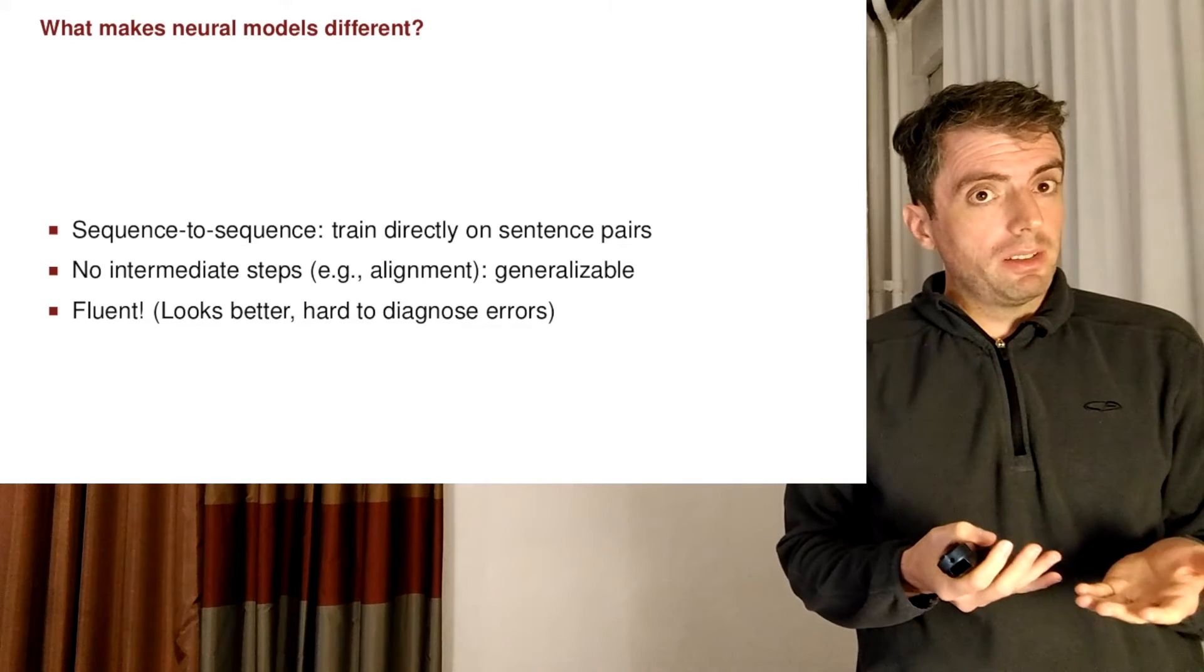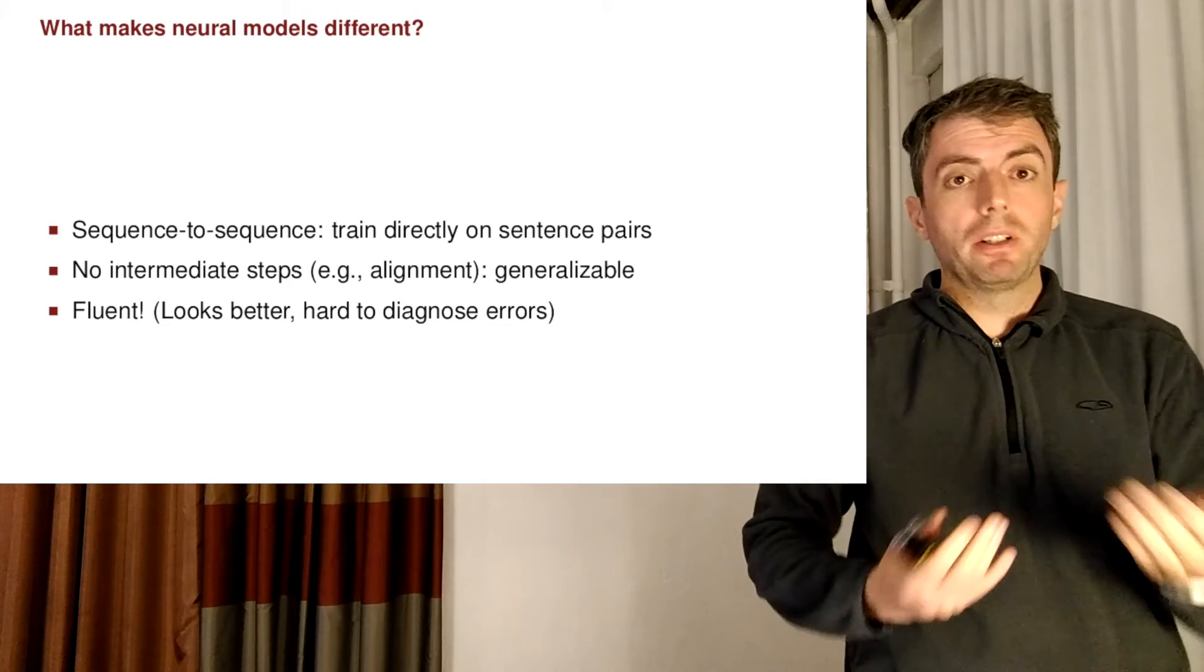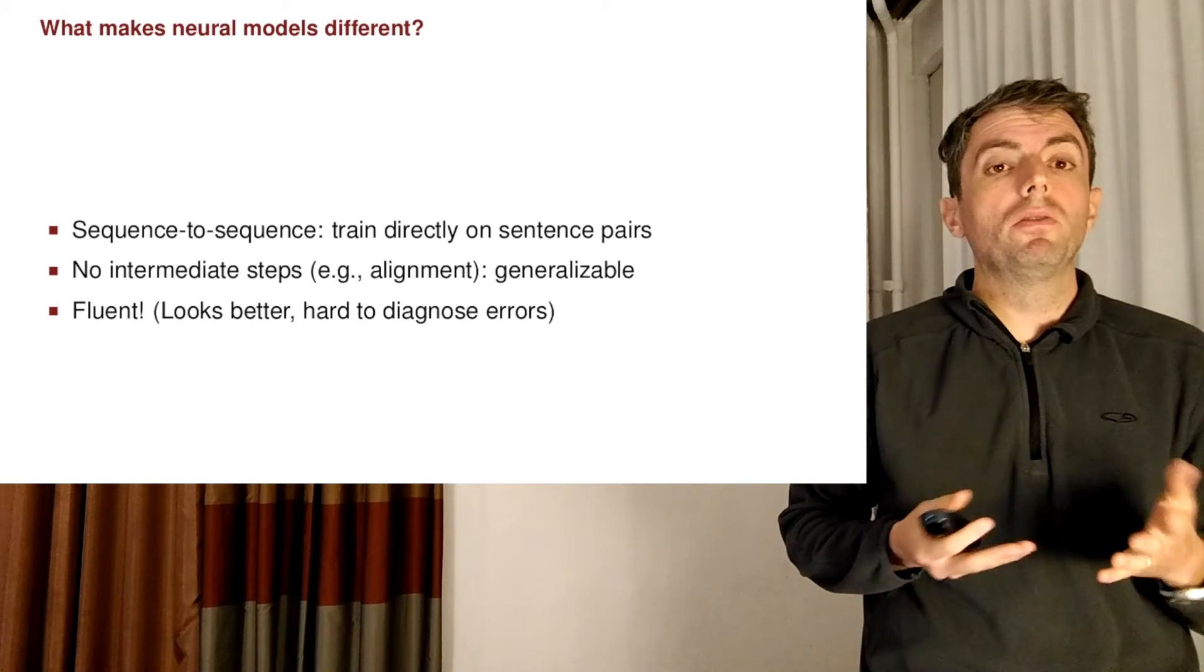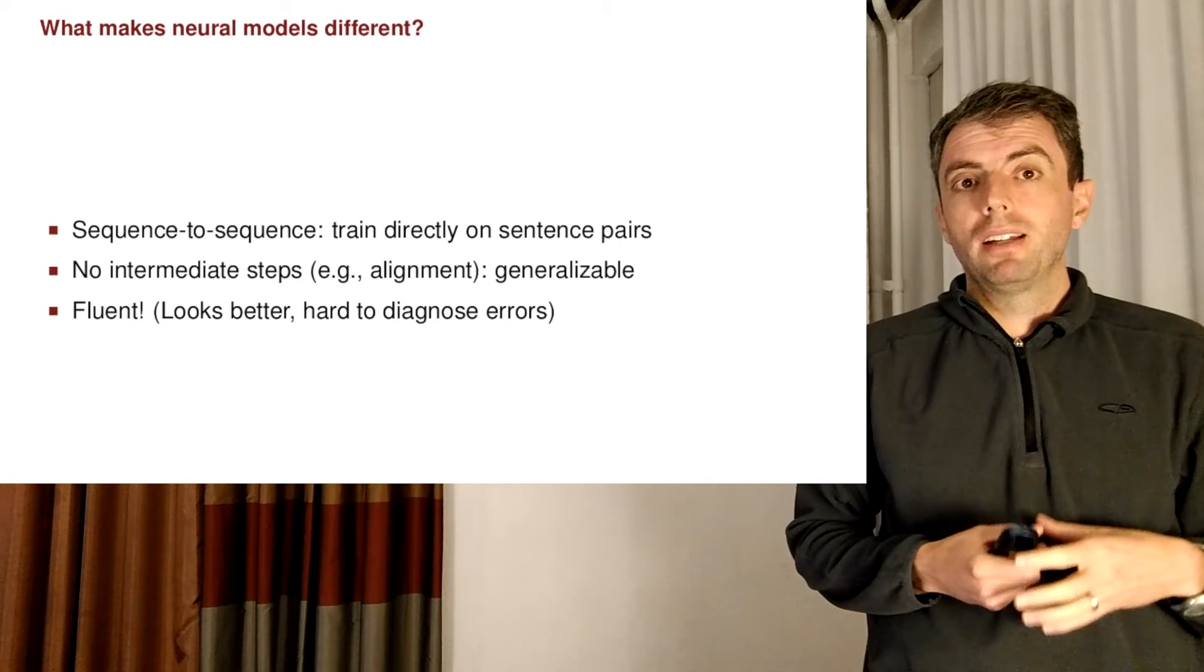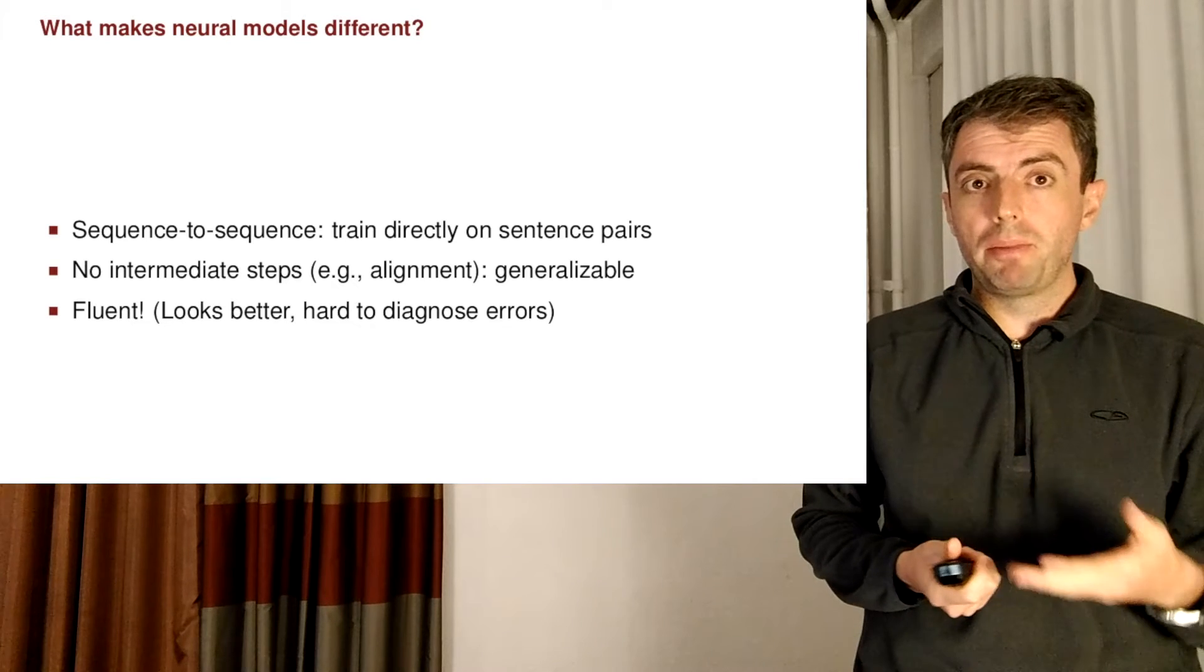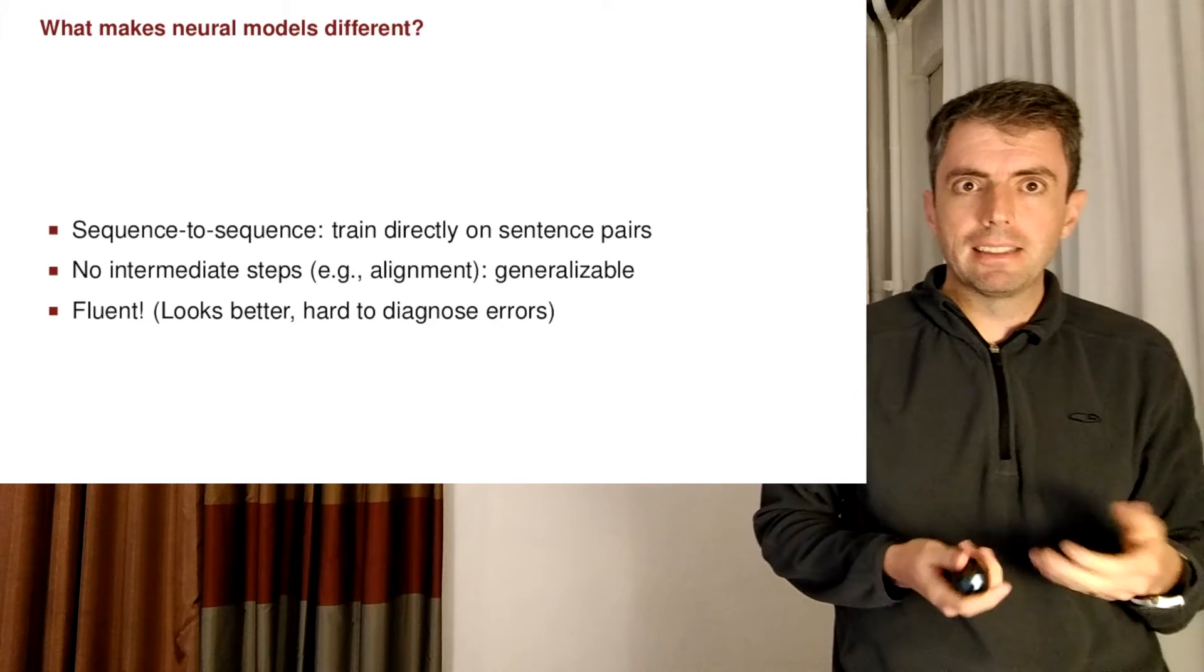When neural systems make mistakes, they often produce perfectly reasonable sentences in the target language, but you have no idea that a mistake was made. So, the problems, when they appear, are a little bit more insidious.